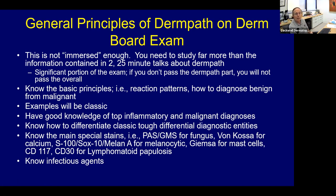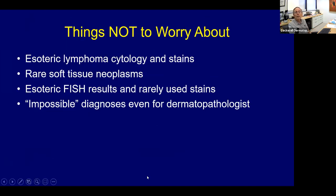You have to know how to differentiate differential diagnostic entities, but you don't need to know a lot of esoteric stuff — not the really bizarre stains for every lymphoma. But you do need to know special stains for fungus, calcium, melanocytic lesions, mast cells, and infectious diseases. Don't worry about rare soft tissue neoplasms, rare FISH results, rare genetic results, or rarely used stains. They might have AFX or DFSP, but nothing too obscure. It's a fair test.